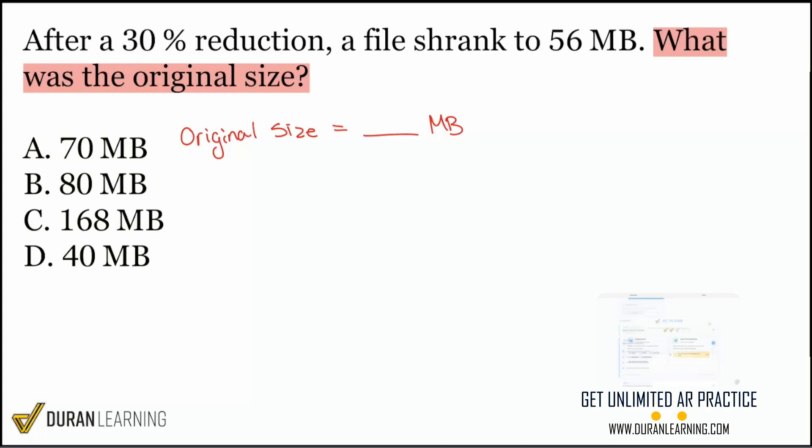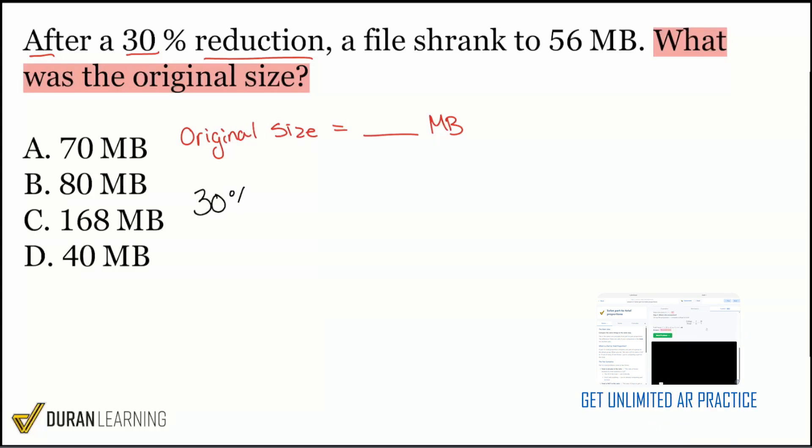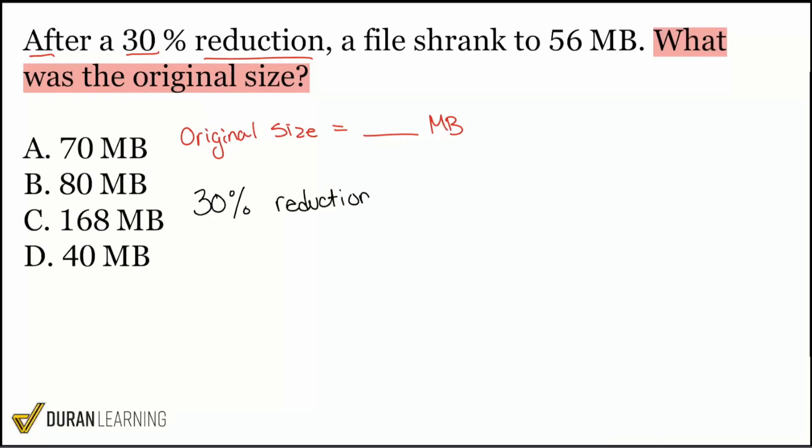And if you take the moment on this next step to identify your information properly, you're going to see why the wrong answer is C. I'll show you right now. Here we go. It says after a 30% reduction. Let me write that down: 30% reduction. It says a file shrank to 56 megabytes. Okay, so the result equals 56 megabytes.